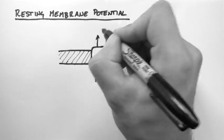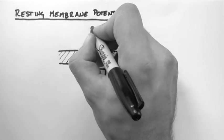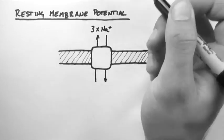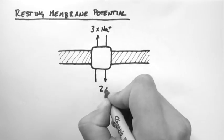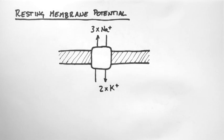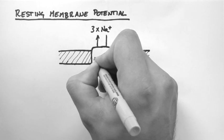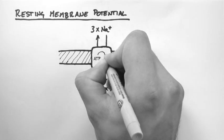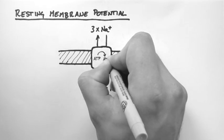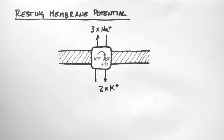This transporter is a sodium potassium ATPase. And it switches 3 sodium for 2 potassium. And to do this it needs ATP which is the energy source of the cells, and it converts it into ADP and inorganic phosphate.